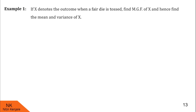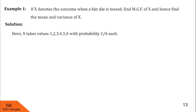Now let us see examples. In this first example, x denotes the outcome when a fair die is tossed. We are asked to find the moment generating function of random variable x, and hence find the mean and variance of x. First, we find the probability distribution of x. When a fair die is tossed, the outcomes are 1 to 6, so x takes values 1 to 6 with probability 1/6 each.